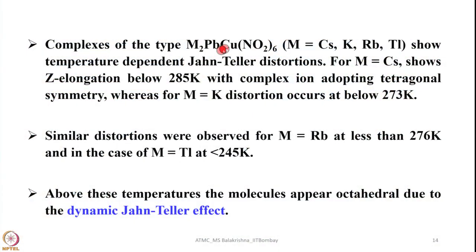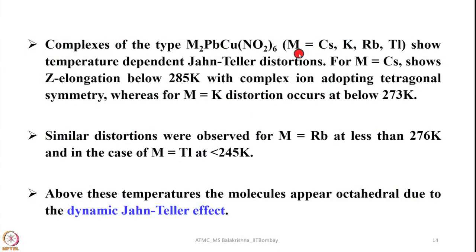In my previous lecture I discussed Jahn-Teller distortion and I was telling you about complexes of this type. Here you can see clearly 6 anionic ligands are there and copper is in plus 2 state. To compensate 4 charges we have lead in plus 2 state and 2 alkali metals in their plus 1 state. So it is a charge balanced complex and this complex shows temperature dependent Jahn-Teller distortion.